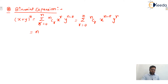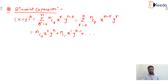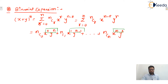Expanding this out: nC0 · x^0 · y^n + nC1 · x^1 · y^(n−1) + … + nCn · x^n · y^0. One thing to observe is that everywhere the sum of the powers of x and y is always equal to n.